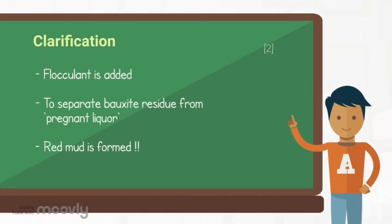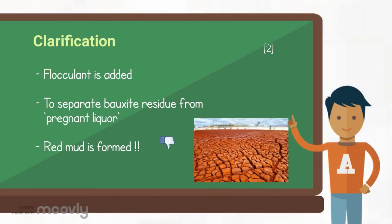Next is clarification. Flocculant is added to separate bauxite residue from pregnant liquor. At this stage, the waste of bioprocess — red mud — is formed.